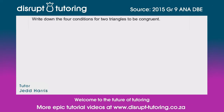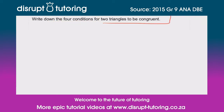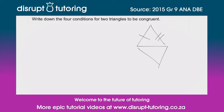Hey guys, it's Jed here from Disrupt Tutoring, and as always it's such a pleasure to join you today. We've got a revision-based question which does pop up in your tests and exams. Essentially the examiner is just looking to see that you know the four conditions that are necessary to prove that two triangles are congruent. We're going to go through each of them and I'm going to give you an example at the same time.